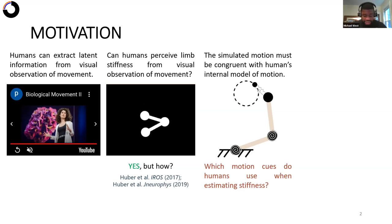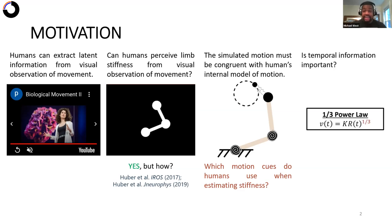Nonetheless, we're still unsure what motion cues humans are using to estimate stiffness. So in a set of new experiments, we aim to answer that question. Specifically, we draw upon the literature of the one-third power law,